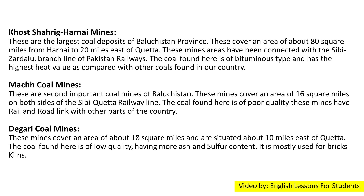Much coal mines are the second important coal mines of Balochistan, covering an area of 16 square miles on both sides of the Sibi-Quetta railway line. The coal found here is of poor quality. These mines have rail and road links with other parts of the country. The Gari coal mines cover an area of about 18 square miles and are situated about 10 miles east of Quetta. The coal found here is of low quality, having more ash and sulfur content, and is mostly used for brick kilns.